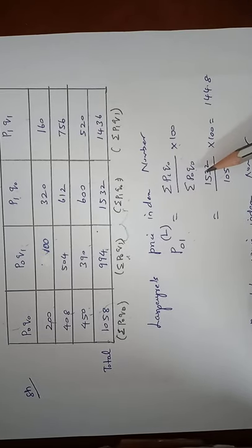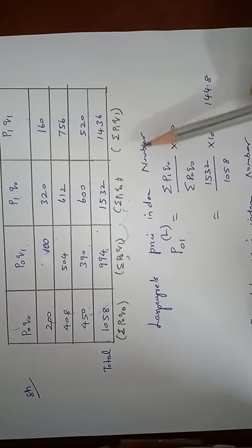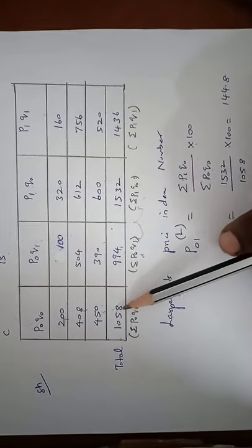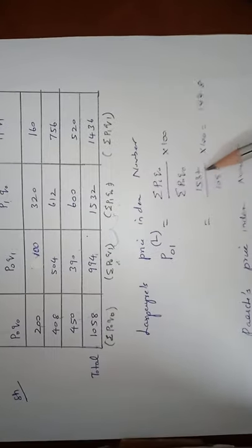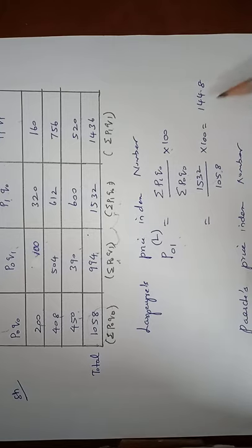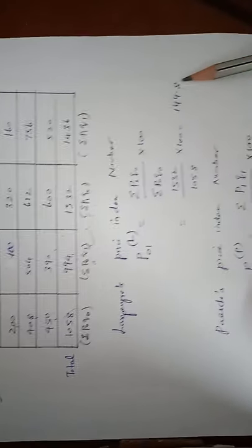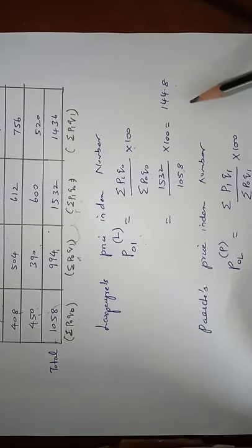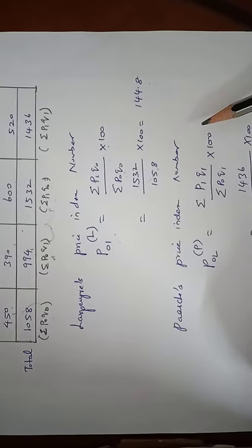So 1532 is taken as numerator. Denominator is sigma P0Q0. So sigma P0Q0 is 1058. So 1532 by 1058 into 100 is 144.8. This is the result of Laspeyres price index number.